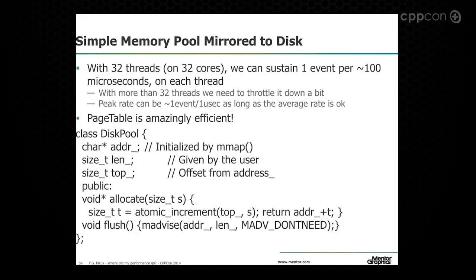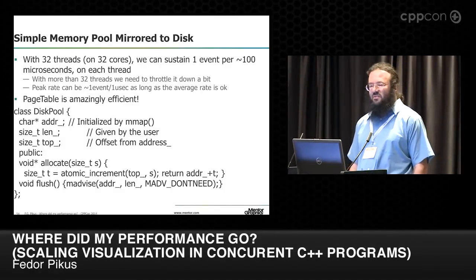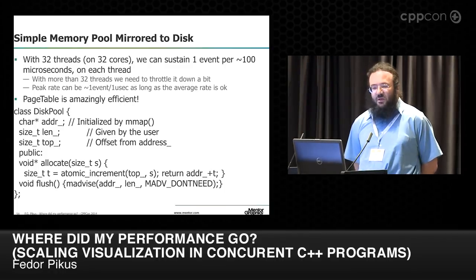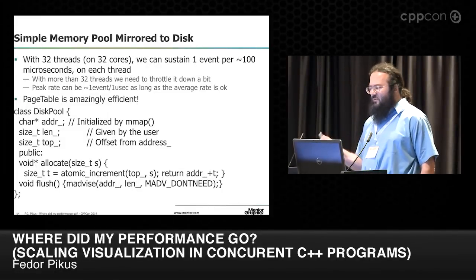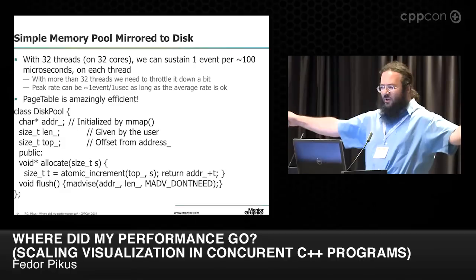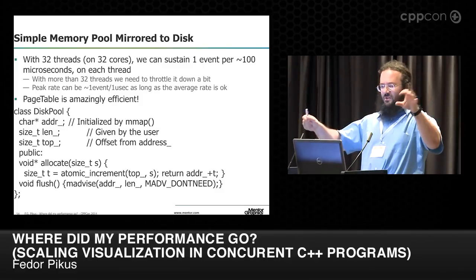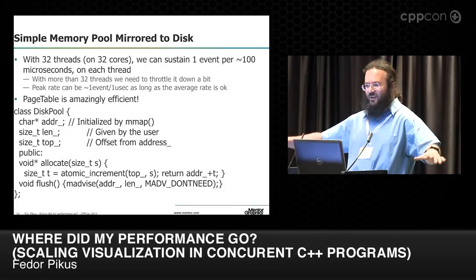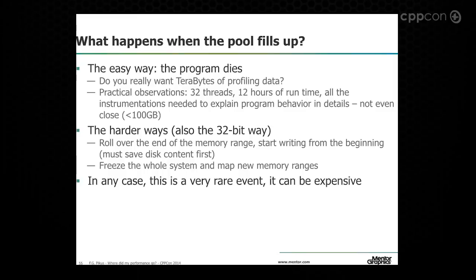Here is the actual practical result: 32 threads running on 32 cores. Without observable disruption of the program being profiled, the sustained rate of events is about one event per 100 microseconds on each thread. If there are more than 32 threads, we throttle it down a bit, but peak rate can spike much higher as long as it's brief. This testifies to how incredibly efficient the page table is — I'm unmapping a whole bunch of nothing on every call, and the page table handles it very well using a tree structure.